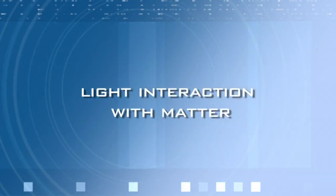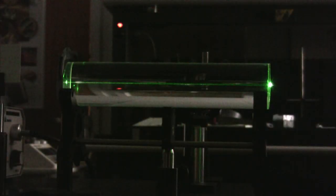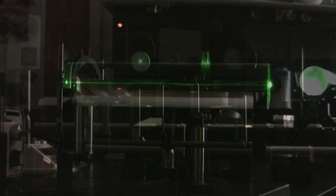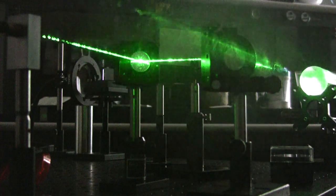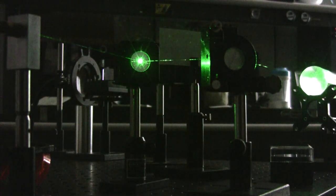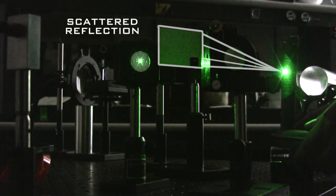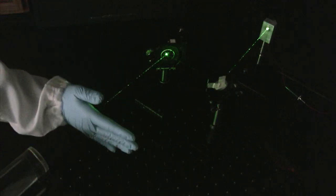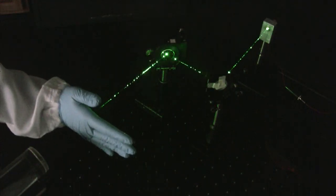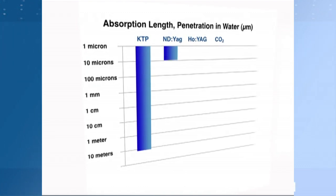Light can be transmitted, reflected, or absorbed. Transmission is the propagation of light through material. Reflection can take on two different kinds: specular, which is mirror-like reflection, and diffuse reflection, which is more scattered. Absorption occurs when light impacts a surface and is not transmitted or reflected. A laser's wavelength determines its absorption in materials.